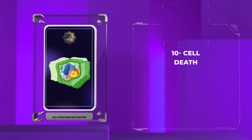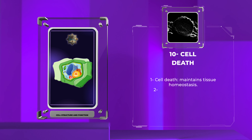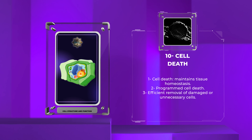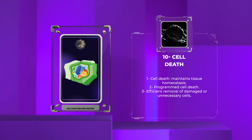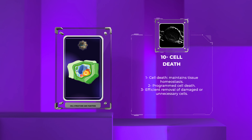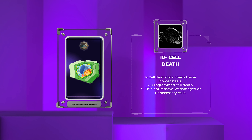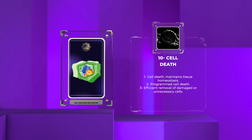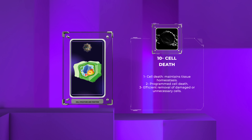Cell death, also known as cell apoptosis, plays a crucial role in maintaining tissue homeostasis and eliminating damaged or unnecessary cells. By undergoing a regulated process of programmed cell death, cells can be efficiently removed without causing harm to neighboring cells or the organism as a whole.